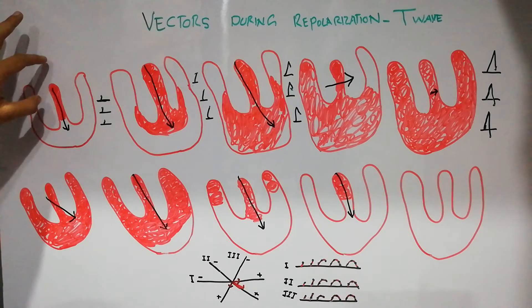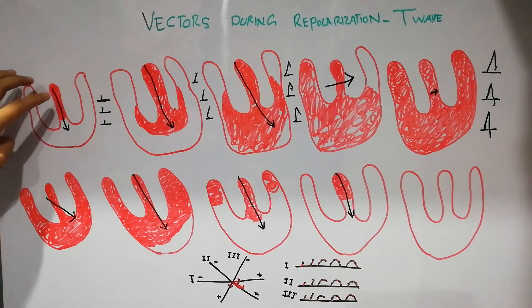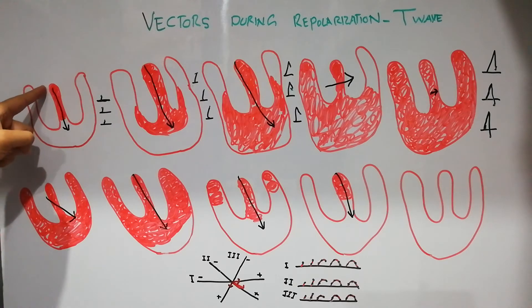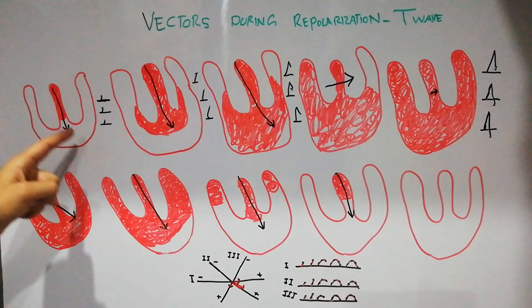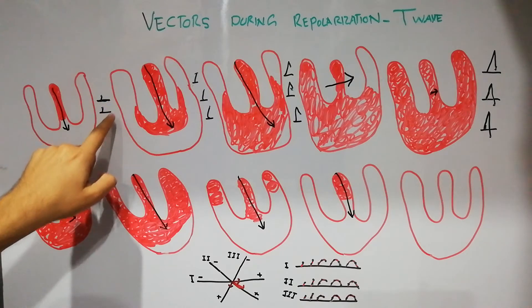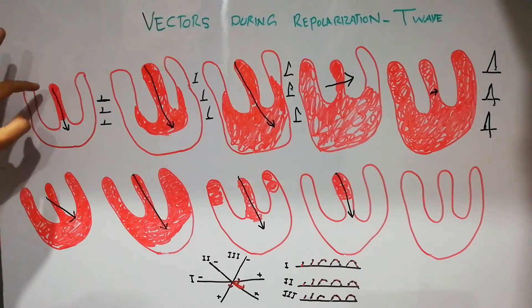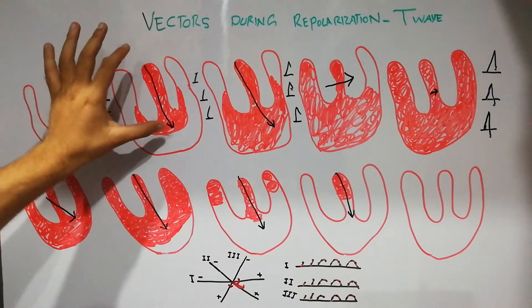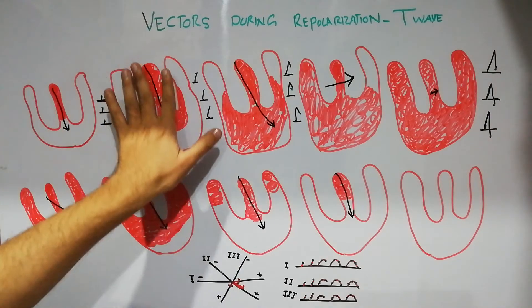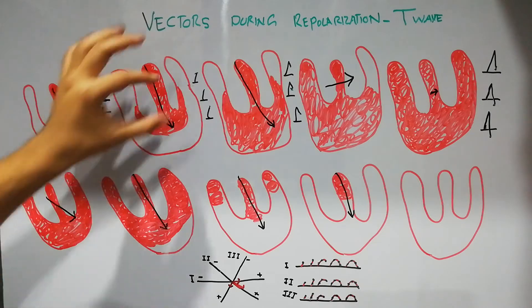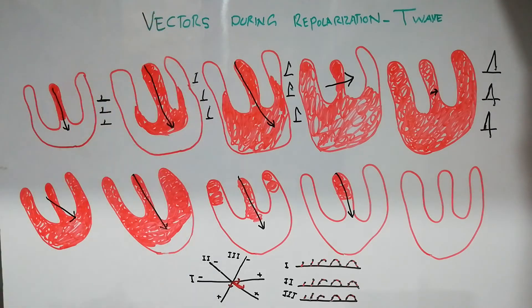During the depolarization process of the ventricles, the depolarization process starts in the septum. In the initial vector it is in the positive direction, and the wave formation in lead 1, lead 2, and lead 3 is positive. The deflection is positive because the direction of the vector of the initial depolarization wave is positive. Then the depolarization spreads from the septum towards the endocardium, the vector enlarges, and the wave formation on lead 1, lead 2, and lead 3 also increases.